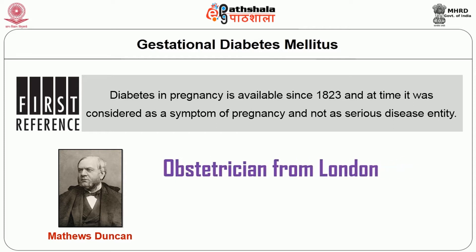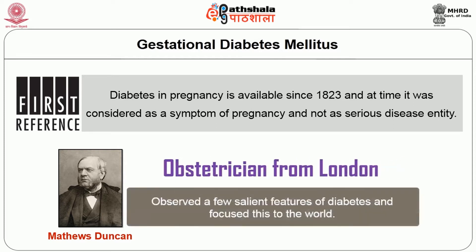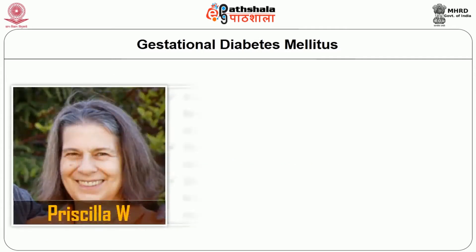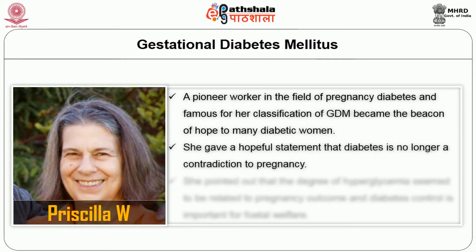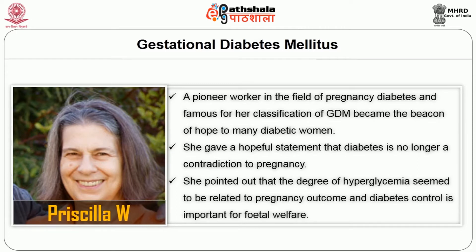Priscilla White, a pioneer worker in the field of pregnancy diabetes and famous for her classification of GDM, became the beacon of hope to many diabetic women. She gave a hopeful statement that diabetes is no longer a contradiction to pregnancy. She pointed out that the degree of hyperglycemia seemed to be related to pregnancy outcome and that diabetes control is important for fetal welfare.